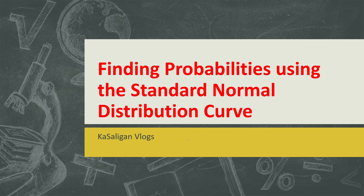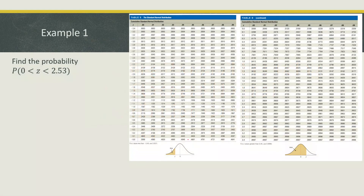Let's go back to our topic which is all about finding probabilities using the standard normal distribution. This is the topic we are going to discuss today. Finding probabilities using the standard normal distribution follows the same process as finding the areas using the standard normal distribution. We have here: find the probability of Z between zero and two point fifty three.